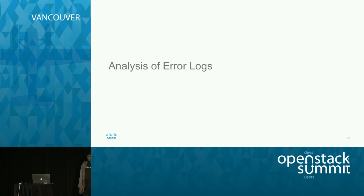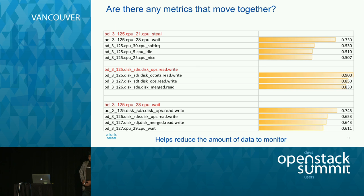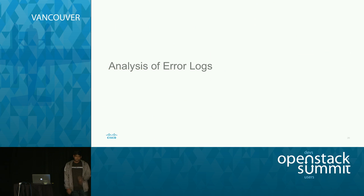In this section, I talked about how an admin has tons of logs and tons of metrics, how he can reduce the amount of these logs and metrics, and then how he can actually correlate the logs with metrics. Now my colleague is going to talk about how we can correlate the error logs and find out what is wrong with the cluster.